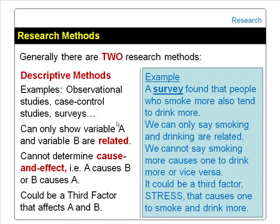For example, a survey found that people who smoke more also tend to drink more. A survey is a descriptive research method, so we can only say smoking and drinking are related or associated. We cannot say smoking more causes one to drink more, or vice versa. It could be due to a third factor — stress, an extraneous variable. A person under stress may smoke and drink more.